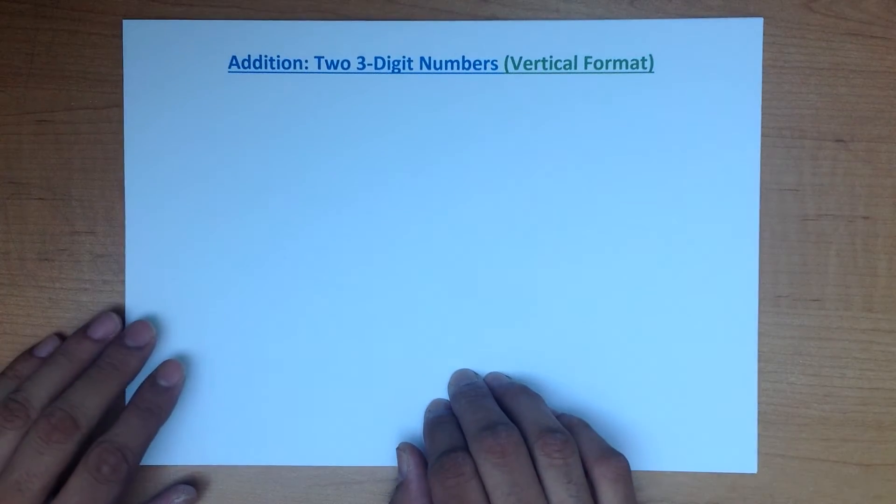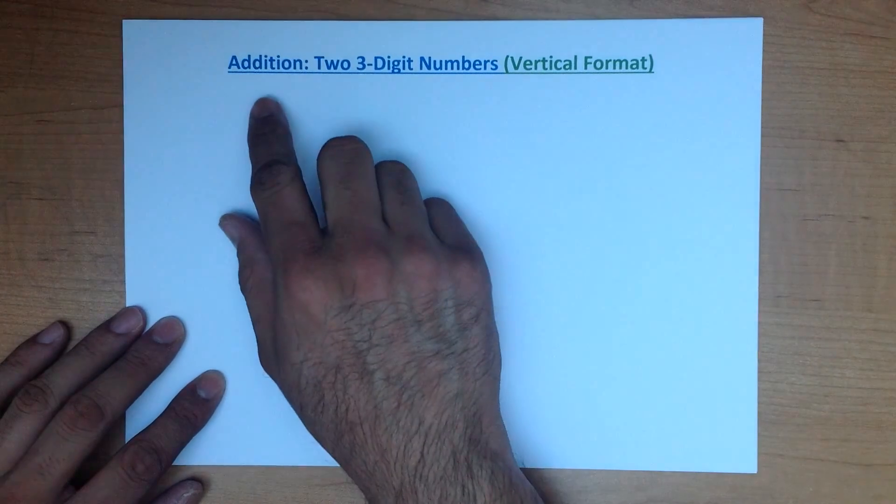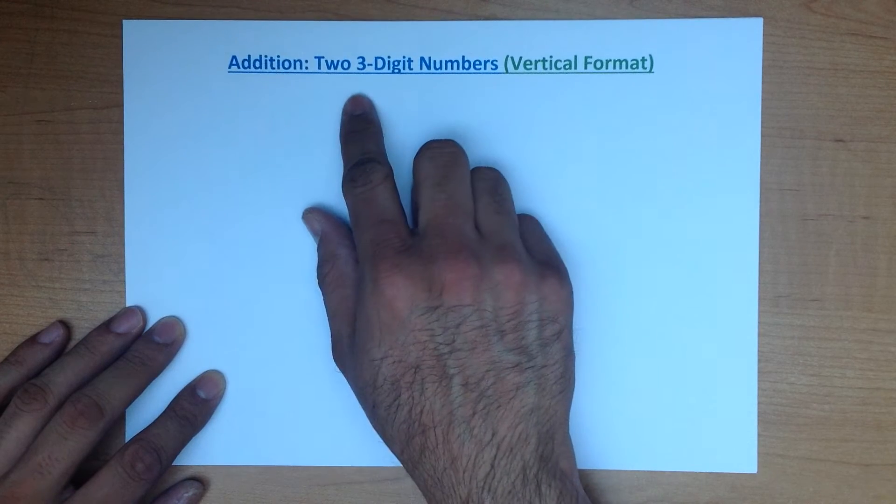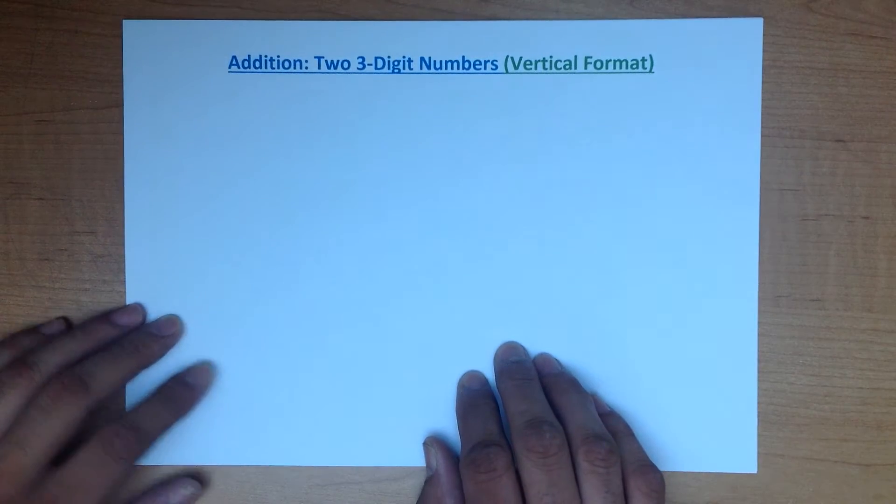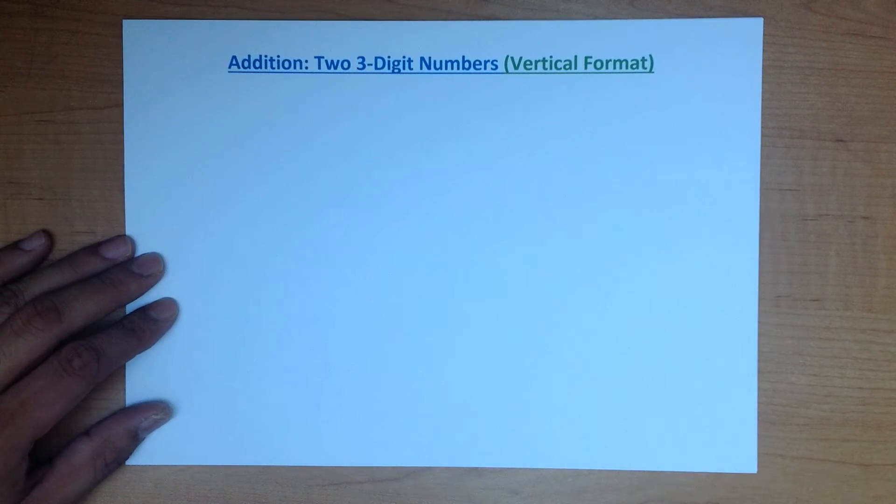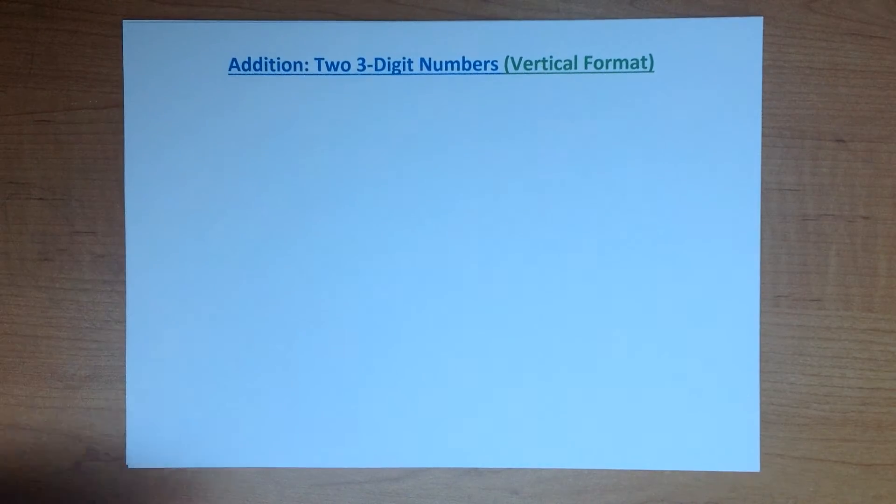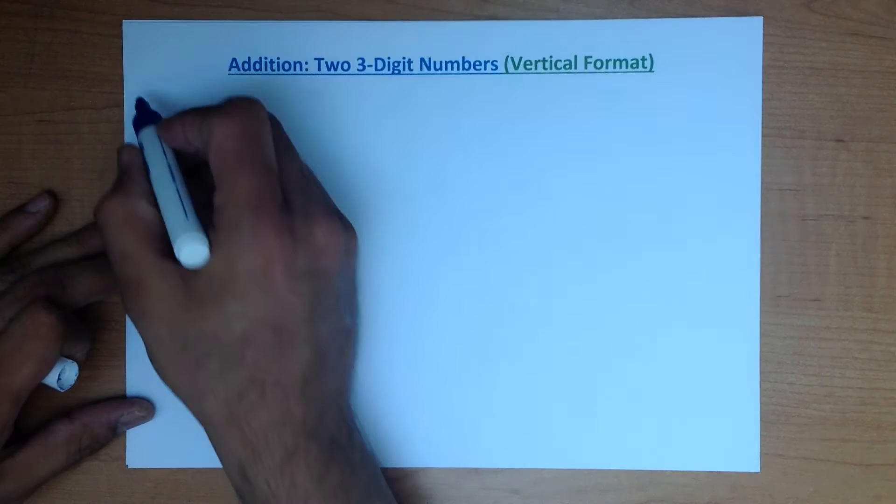In this tutorial we are going to go through addition of two three-digit numbers using the vertical format. Let's start with a nice easy example.